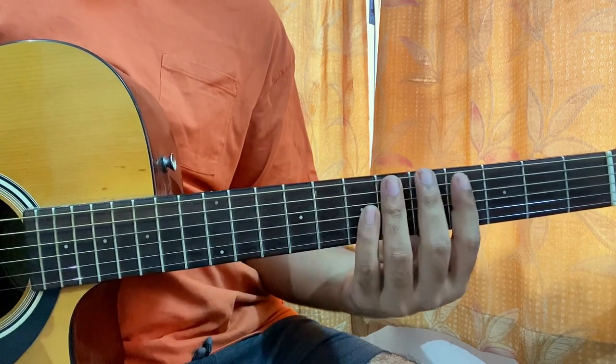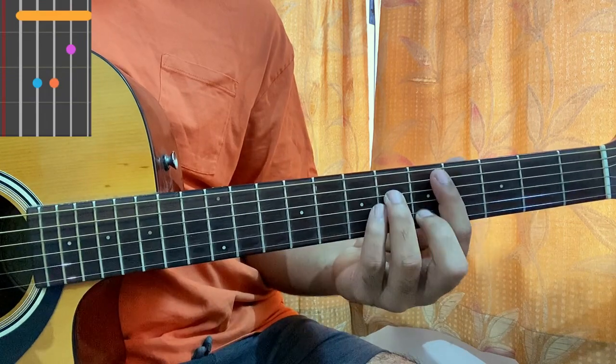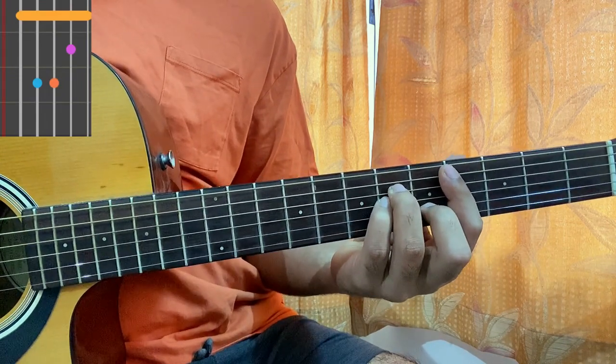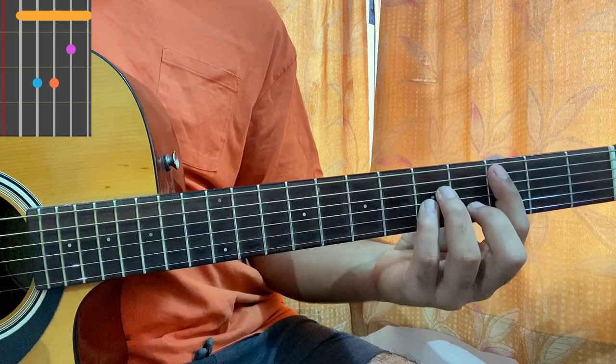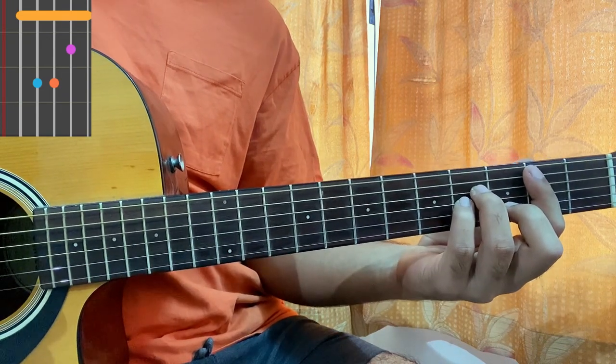Then this chord shape which is C sharp minor: barre the fourth fret, fifth fret on the B string, sixth fret on D and G. If I bring this shape a whole step down, it's B minor: mute, two four four three two.